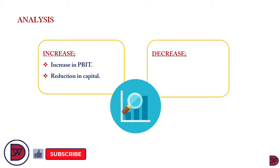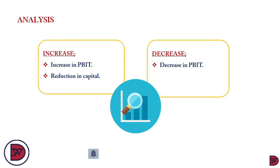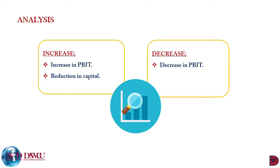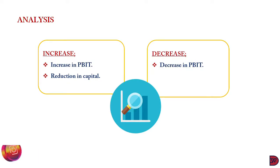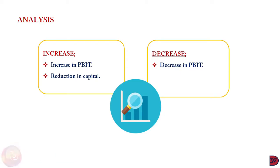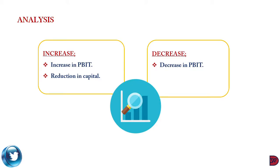If there is a reduction, the reduction in capital employed is more than that of the operating profit. When we come to a decrease in return on capital employed, there is a decrease in profit before interest and tax — this can occur when the market is so competitive that the business has to reduce its prices, or when expenses incurred were so huge that they forced the operating profit down. The analysis made with respect to the operating profit margin will apply here as well.